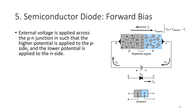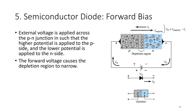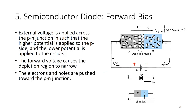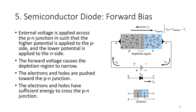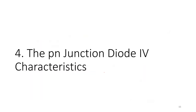With forward bias, external voltage is applied such that the higher potential is on the P-side and the lower potential on the N-side — the positive terminal of the voltage source connects to P and the negative to N. The forward voltage causes the depletion region to narrow, and electrons and holes are pushed toward the PN junction. The electrons and holes have sufficient energy to cross the PN junction, hence allowing current flow.